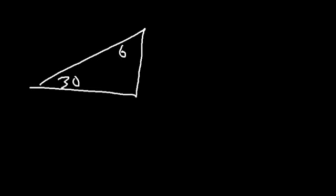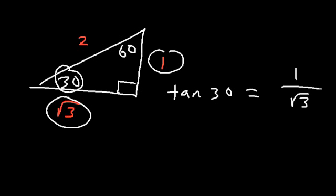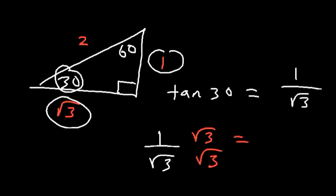For those wondering why the exact value of tangent 30 is root 3 over 3, you can find this using the 30-60-90 reference triangle. Across the 30 is 1, across the 60 is root 3, across the 90 is 2. So tangent 30 equals opposite over adjacent, which is 1 over root 3. Rationalizing the denominator, 1 over root 3 equals root 3 over 3.